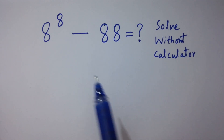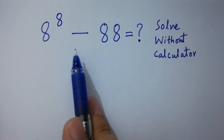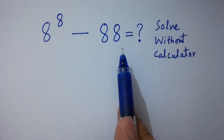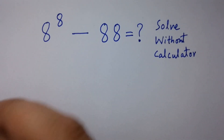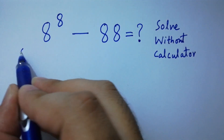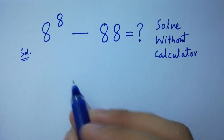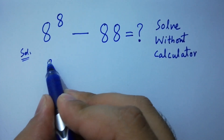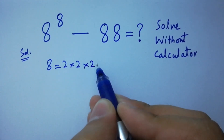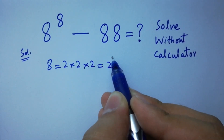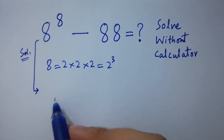Hello friends. 8 to the power 8 minus 88 equals what? Solved without a calculator. Let's have a solution. Since 8 equals 2 times 2 is 4, times 2 is 8, which is equal to 2 cubed.